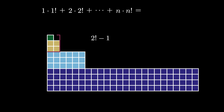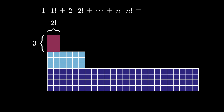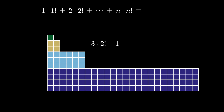But then that means that this set of squares here sits inside a 3 by 2 factorial rectangle, and since it's missing 1 square, the number here is 3 times 2 factorial minus 1, which is 3 factorial minus 1.